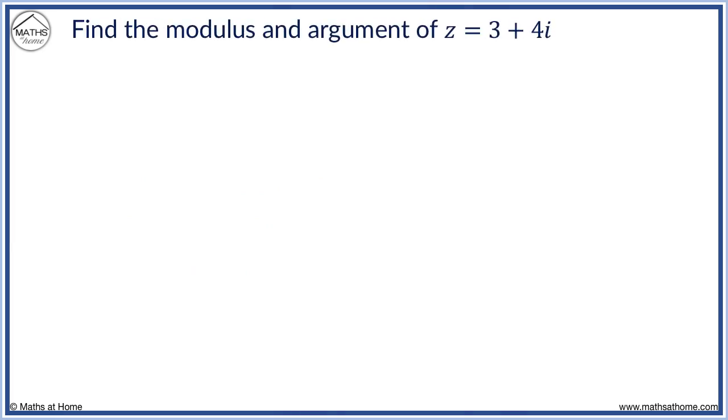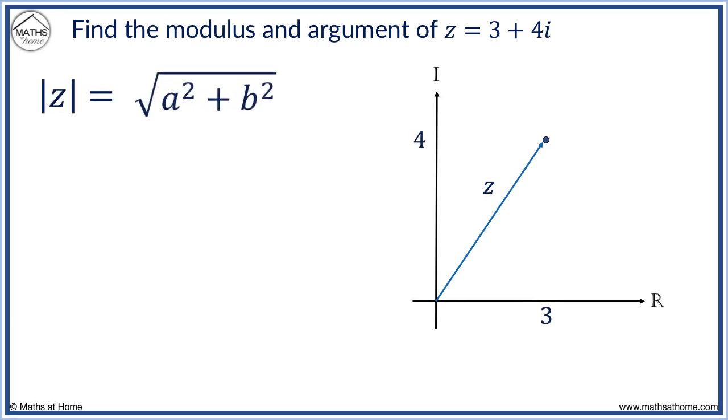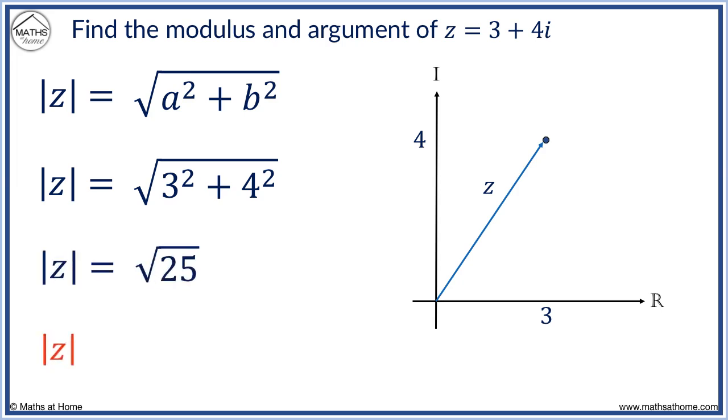For example, find the modulus and argument of z equals 3 plus 4i. The number is as shown. The modulus is found using this formula. Here, a equals 3 and b equals 4. 3 squared plus 4 squared equals 25 and the square root of 25 equals 5. The modulus is 5.